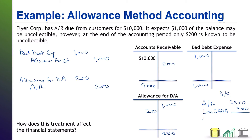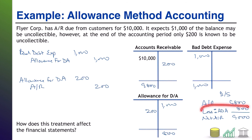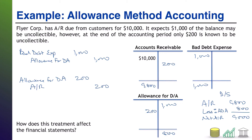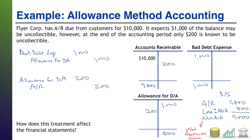That gives us a net AR of $9,000 — look how informative that is to investors. We are owed $9,800 from customers, we think $800 of it won't get paid, and our expected net collections are $9,000. This net collections figure of $9,000 is also known as the net realizable value of AR — how much do we really think will come true of the $9,800?